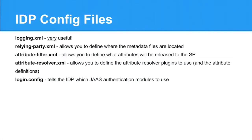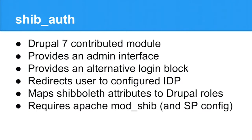For IDP config files: logging.xml - logging wasn't actually enabled by default, so you're running a bit blind at the start, so make sure you enable logging. relyingparty.xml allows you to list all the SPs that your IDP is going to support and contains a reference to where the metadata is located on the identity provider. The attribute resolver allows you to define the attribute resolver plugins used - this could be an LDAP directory service, like Active Directory, or you can build your own. The attribute filter defines which attributes are actually released to the service providers. And the login.config file tells the identity provider which JAAS authentication module to use - you can actually have multiple authentication modules registered.